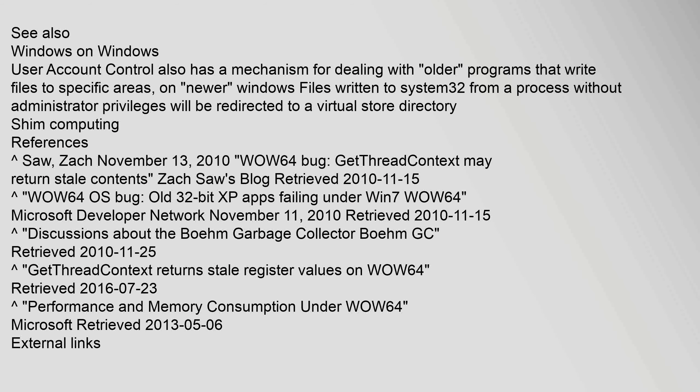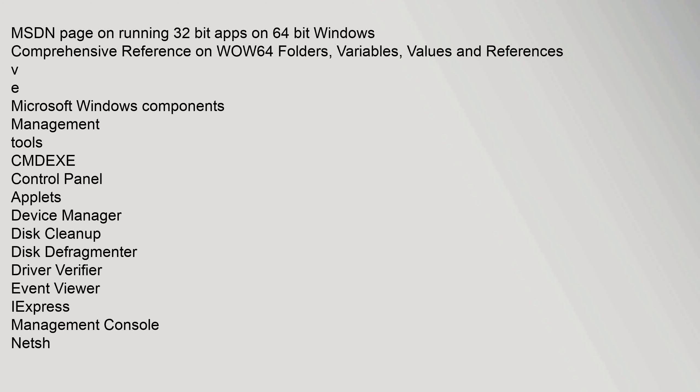User Account Control also has a mechanism for dealing with older programs that write files to specific areas; on newer Windows, files written to System32 from a process without administrator privileges will be redirected to a virtual store directory. References include a 2010 blog post on the WOW64 bug affecting GetThreadContext, the MSDN page on running 32-bit apps on 64-bit Windows, and a comprehensive reference on WOW64 folders, variables, and values.